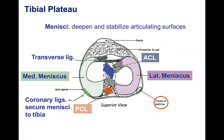The fibula is on the lateral aspect of your shin. If you feel the outside of your shin right now — going past your femur inferiorly — you'll feel another bony prominence after you feel your knee joint: that's the head of your fibula. So the fibula is lateral.